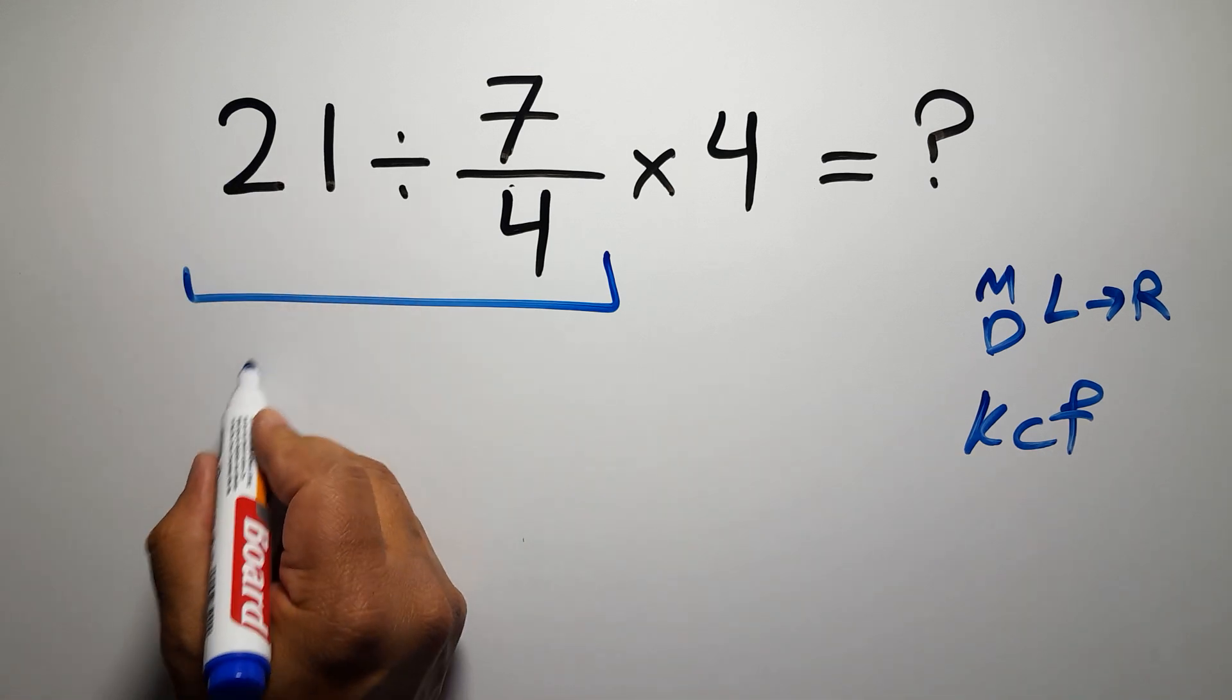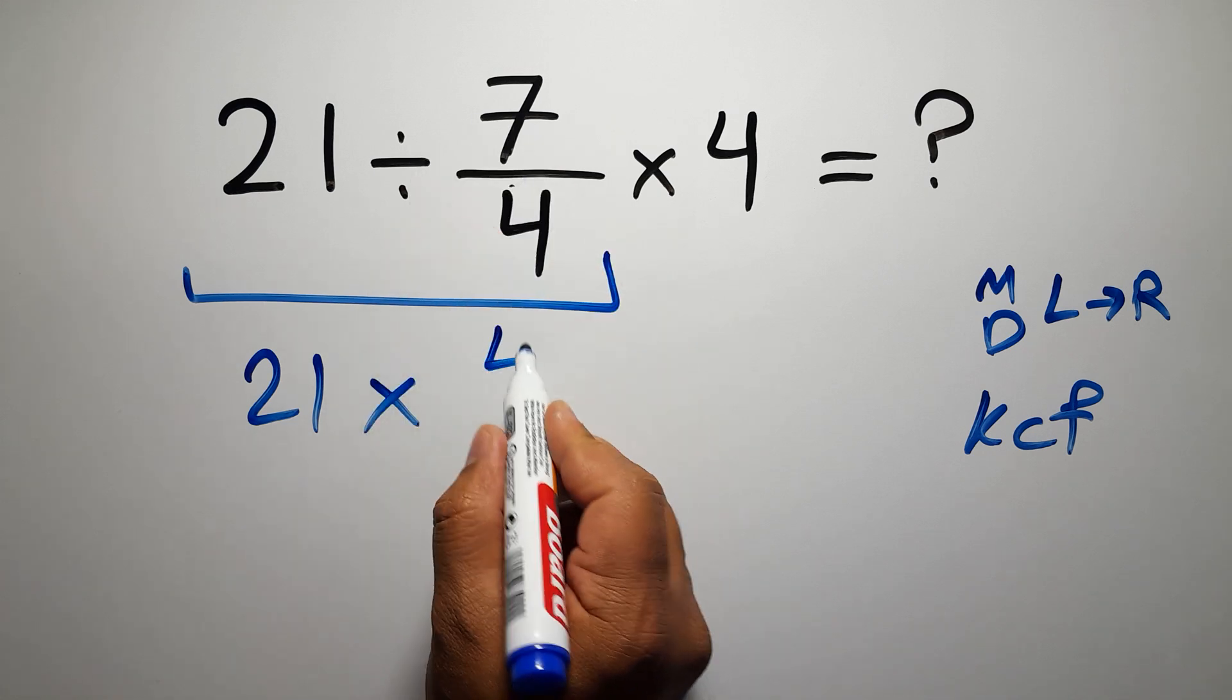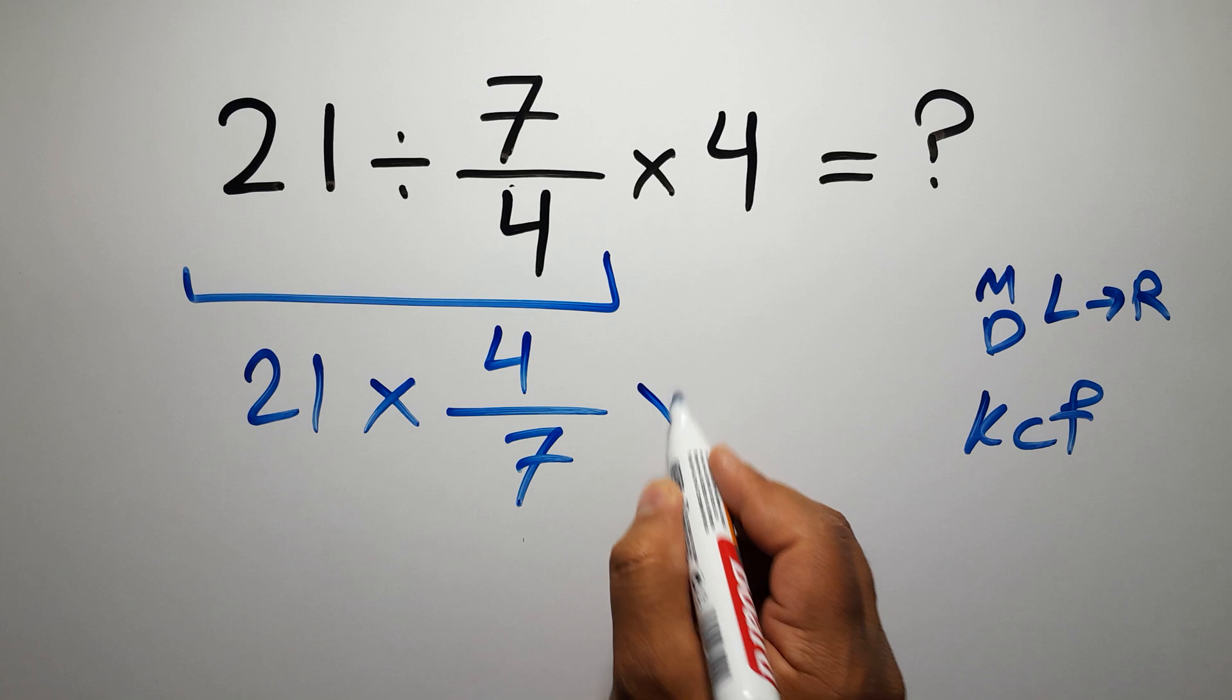We can write keep the first fraction, change division to multiplication, and flip the second fraction. Okay, and times 4.